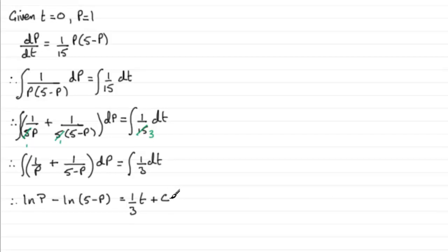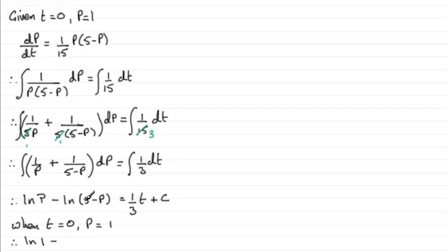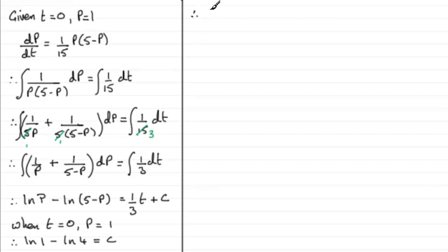We need to find the constant c using the initial condition: when t equals 0, p equals 1. Substituting in: natural log of 1 minus natural log of (5 minus 1) equals (1/3)(0) plus c. Natural log of 1 is 0, so we get 0 minus natural log of 4 equals c. Therefore c equals minus natural log of 4.